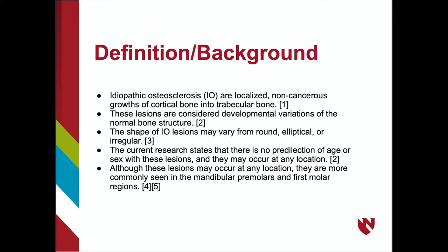Idiopathic osteosclerosis lesions are variable in shape, ranging from round to elliptical to irregular shaped. The current literature states that there are no predispositions based on age or sex with these lesions. The most common regions for idiopathic osteosclerosis to occur are the mandibular premolar and first molar regions, although these lesions may occur at any location in the body.